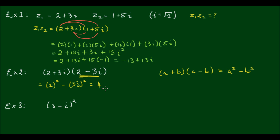2 squared is equal to 4, minus 3 squared is 9, and then i squared. We get 4 minus 9 — well, i squared is equal to negative 1 again. So effectively we have 4 plus 9, which is equal to 13.